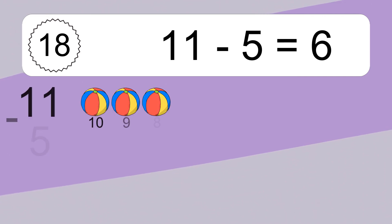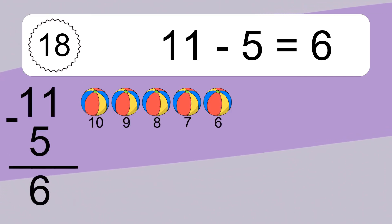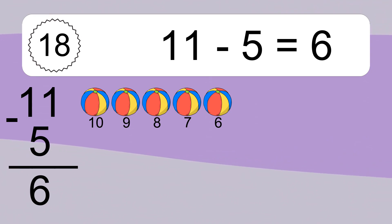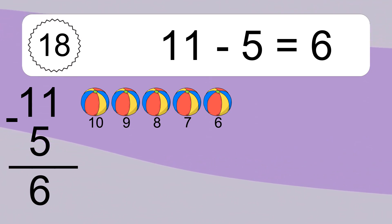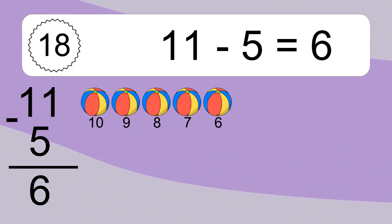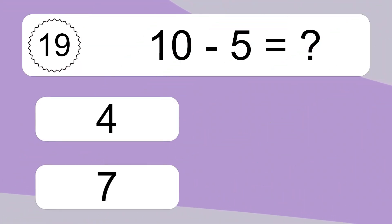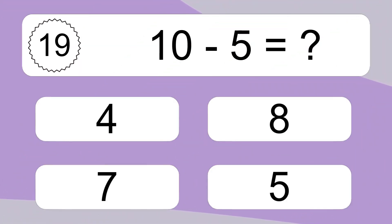11 minus 5 equals what? 11 minus 5 equals 6. Let's count it: 10, 9, 8, 7, 6.